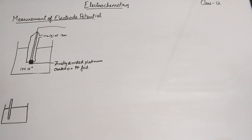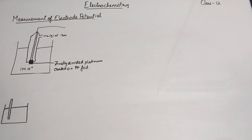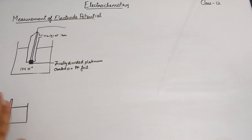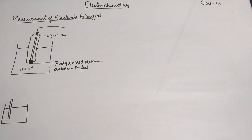The electrode potential is the potential that exists between the electrolyte and the electrode. So if we have some random electrolyte and some random metal electrode, and we want to find the electrode potential of this particular half cell — can we do it right now?